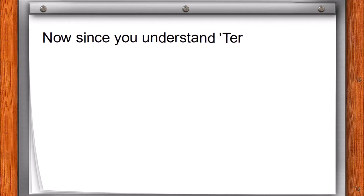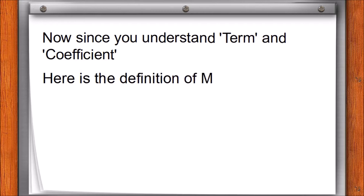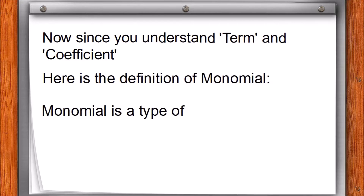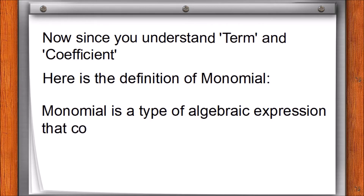Now since you understand term and coefficient, here is the definition of monomial. A monomial is a type of algebraic expression that contains only one term.